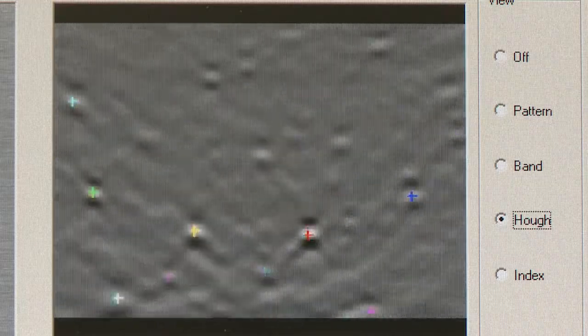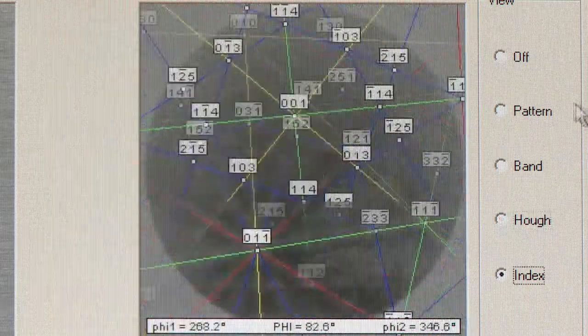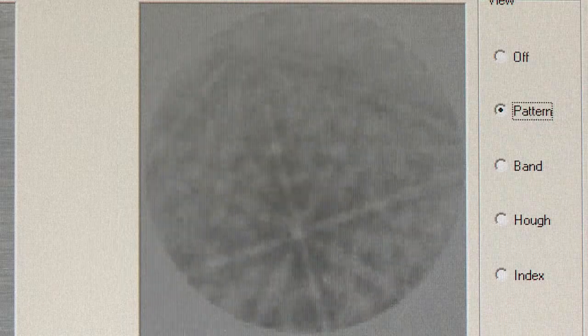The EBSD technique can also differentiate between compounds that have a similar composition, but different crystal structure. For example, one of the most commonly used titanium alloys, TI-6-4, can have two different crystal structures, called phases.